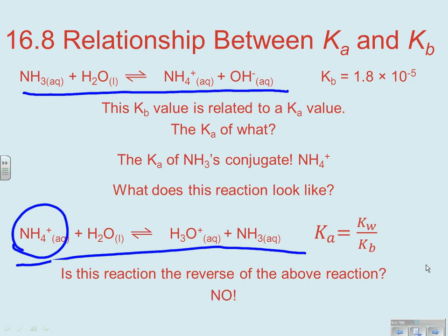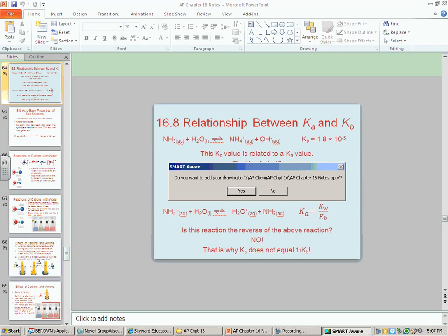So the answer here is no. It's not simply the reverse of the reaction above, and that's why KA does not equal the inverse of KB. If you were simply reversing the reaction from what we looked at last chapter, it would be the inverse of the old K value. So remember, when you have a base reaction and you're looking at a KB, the KA that's related to that KB is not the inverse of the reaction you're looking at. It's the KA you would get if you took the conjugate acid of that base and threw it into water. And that ends our second set of notes. We'll see you next time.